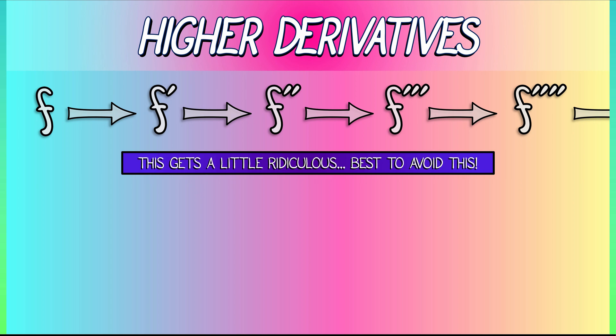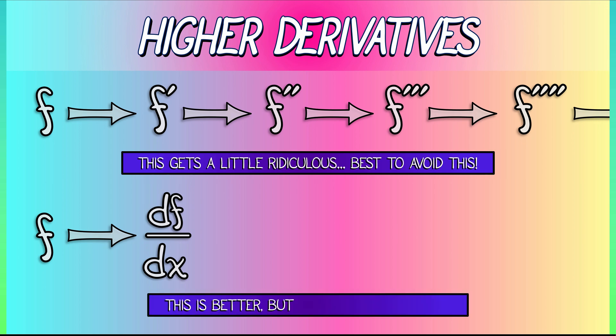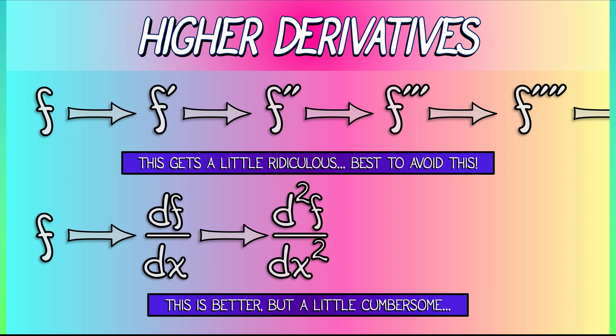So what's the alternative? Well, it is often much better to use the notation df/dx for the first derivative. This tells you explicitly what variable you are differentiating with respect to. Now, this is much better than prime notation, but it does get a little cumbersome in higher degrees. The second derivative is d squared f dx squared.